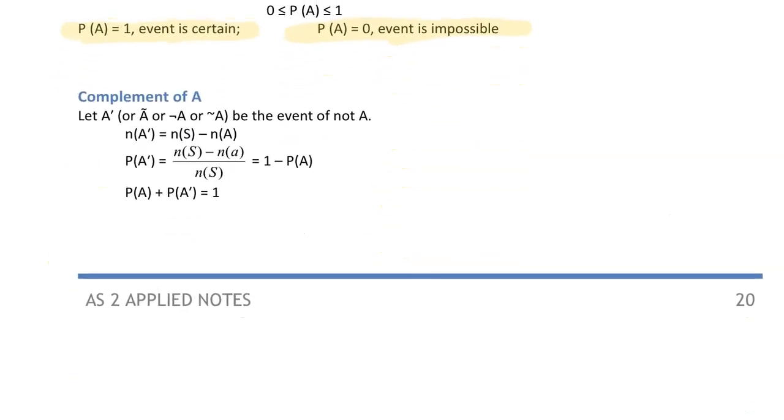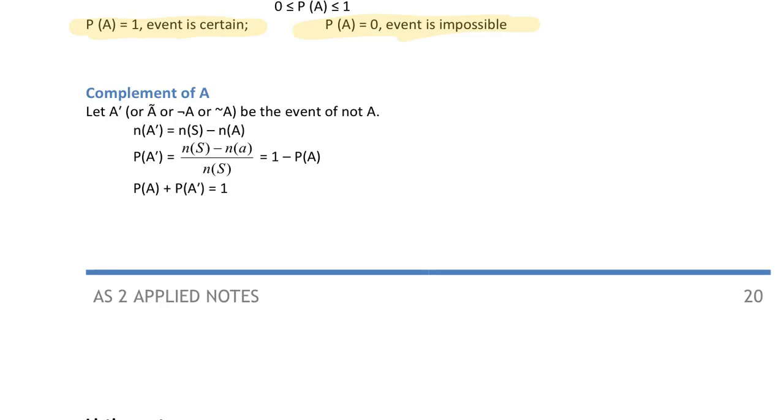Next thing we've got is a complement of A. The complement of A is not A. So you've got the probability of A plus the probability of not A adds up to 1 because those two events cover everything. So being A or not being A, that covers all the possible outcomes. Remember the sum of all the possible outcomes is equal to 1.